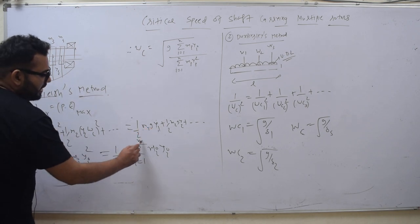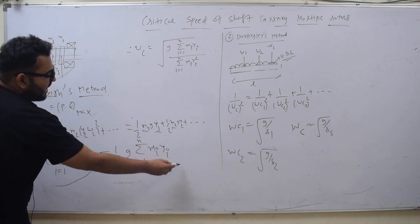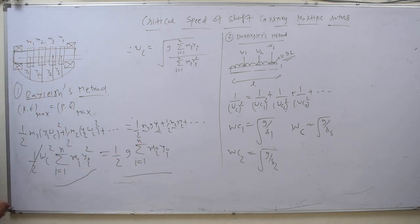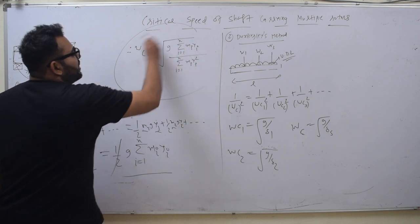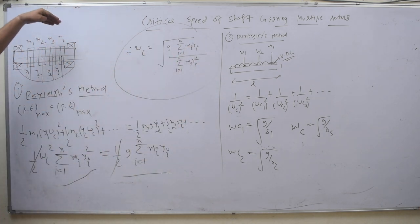One half G is common. It will be sigma i 1 to n, M1 Y1, M2 Y2. So here one half, one half will cancel. Omega C square, so omega C is sigma. So this will be under root of this. So this is critical speed according to Rayleigh's method.